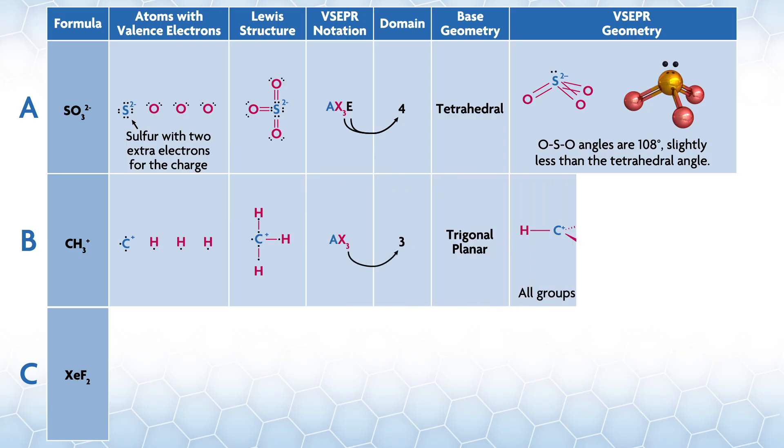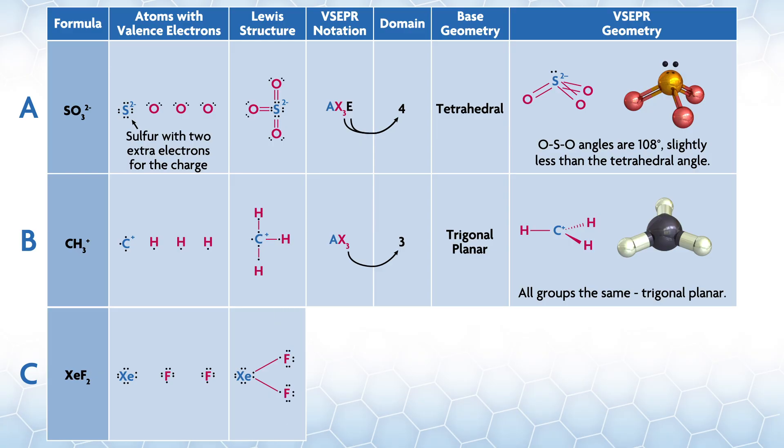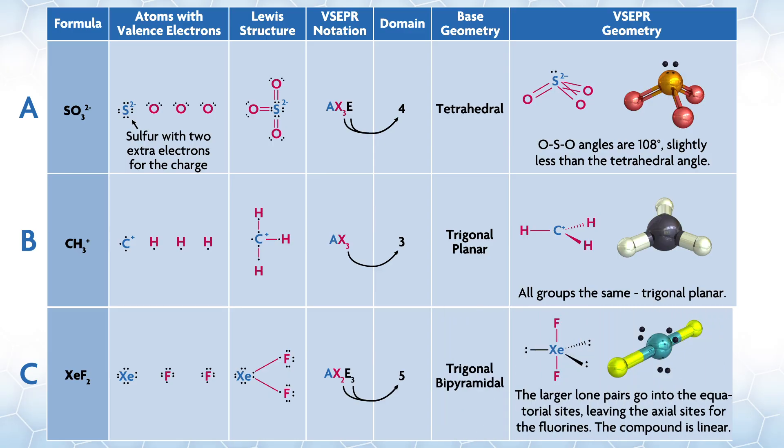For B, you have a carbon with only three electrons after considering the charge. These make bonds to hydrogen and give an AX3E formula. The base structure is trigonal planar. Because the groups are all the same, the exact structure is trigonal planar. Finally, for C, we have xenon difluoride, XeF2. Xenon is a noble gas with eight electrons in its valence shell, makes bonds to two fluorines, leaving three lone pairs. This gives a formula of AE3X2.